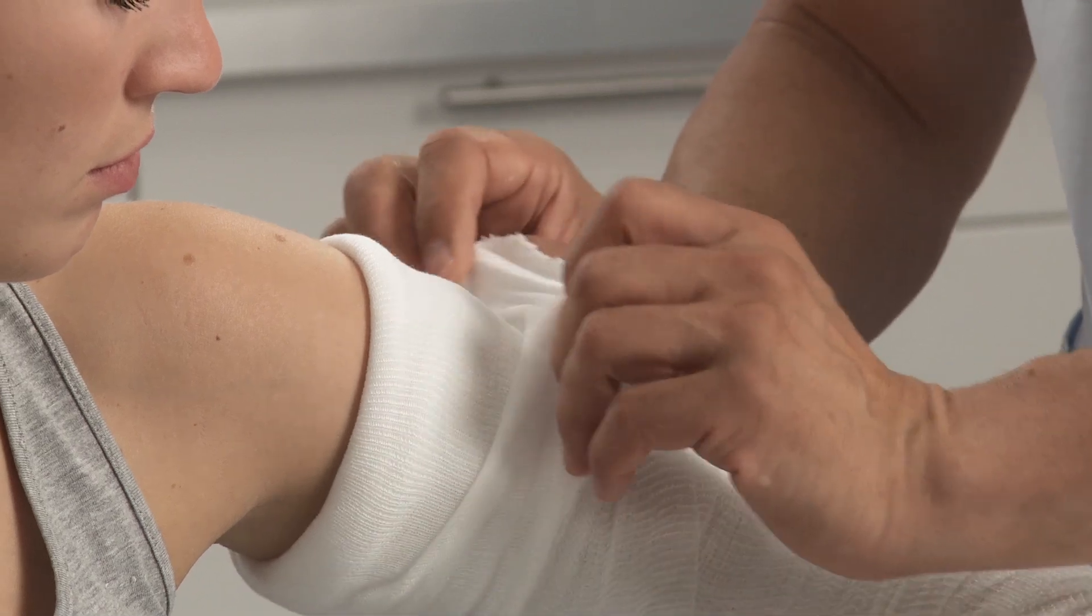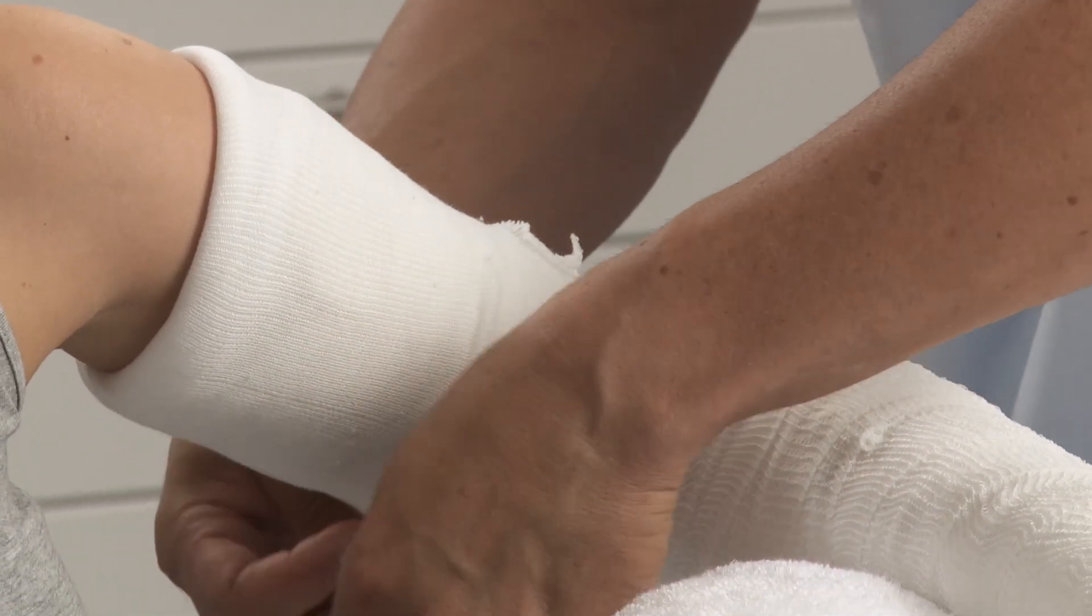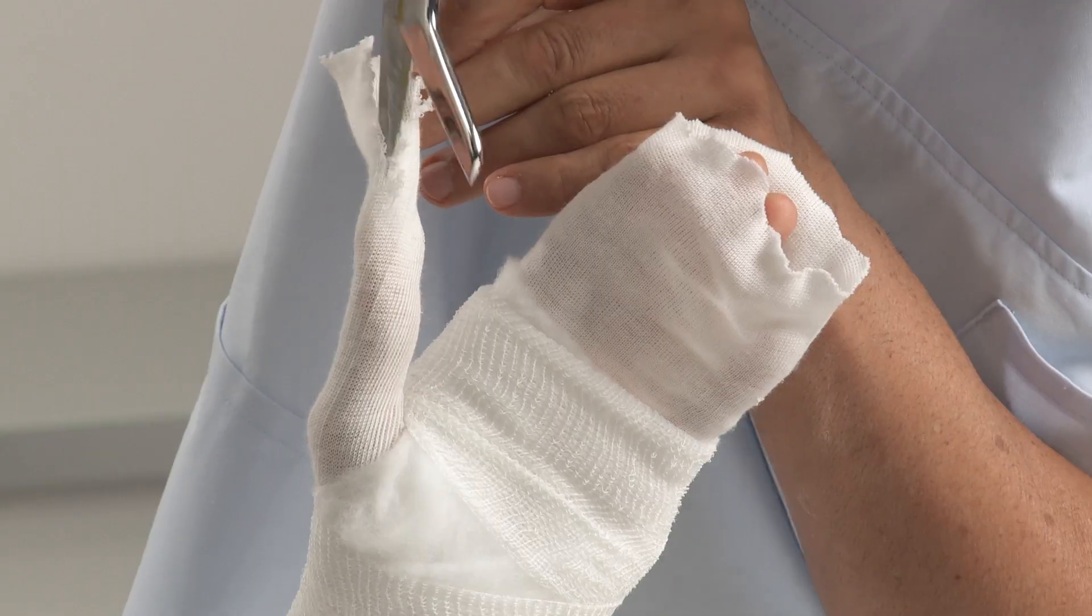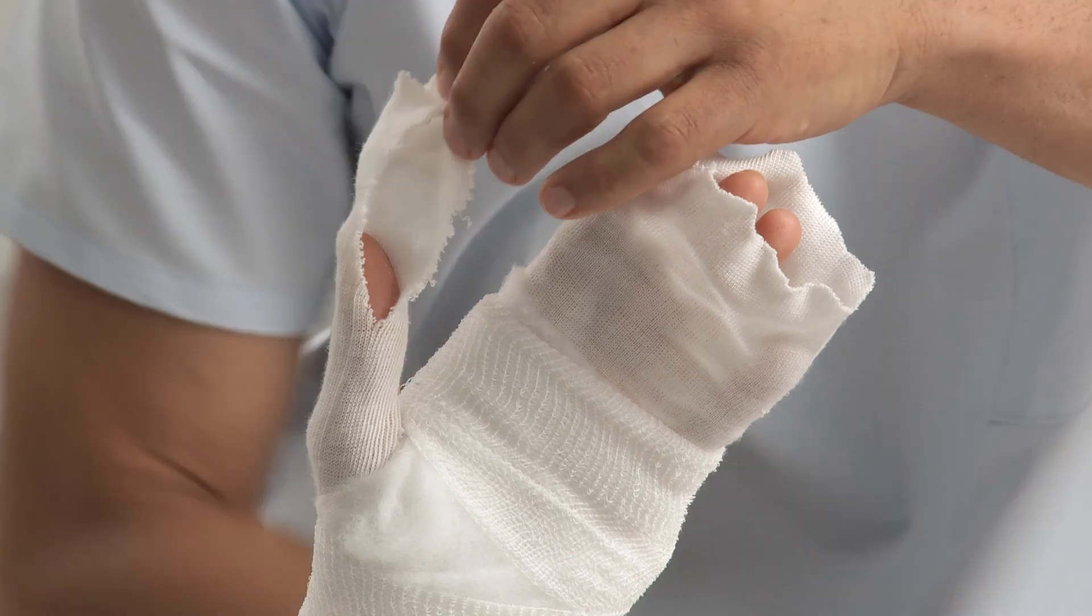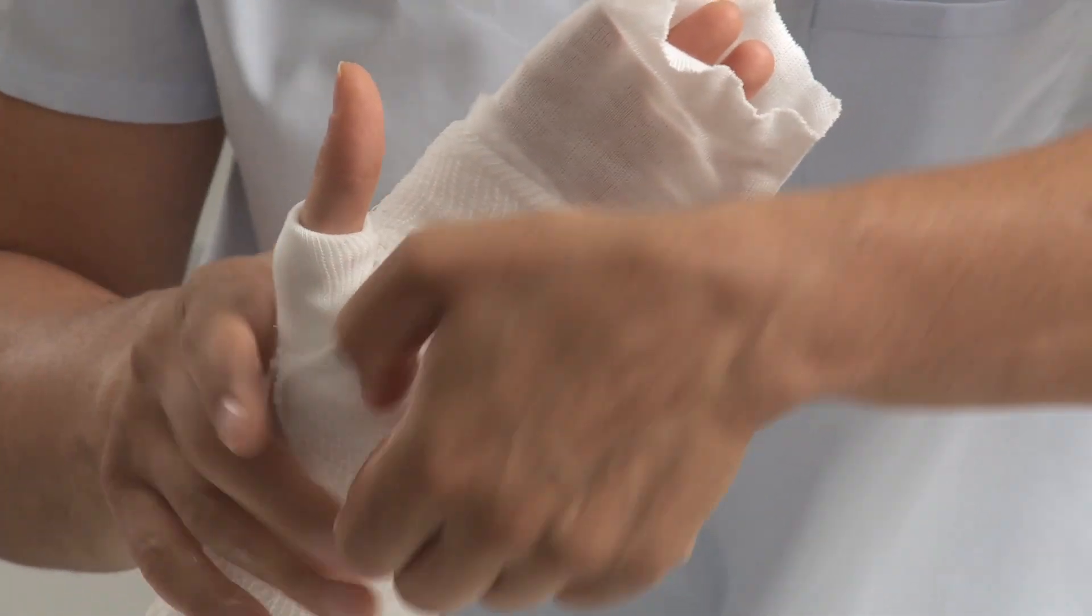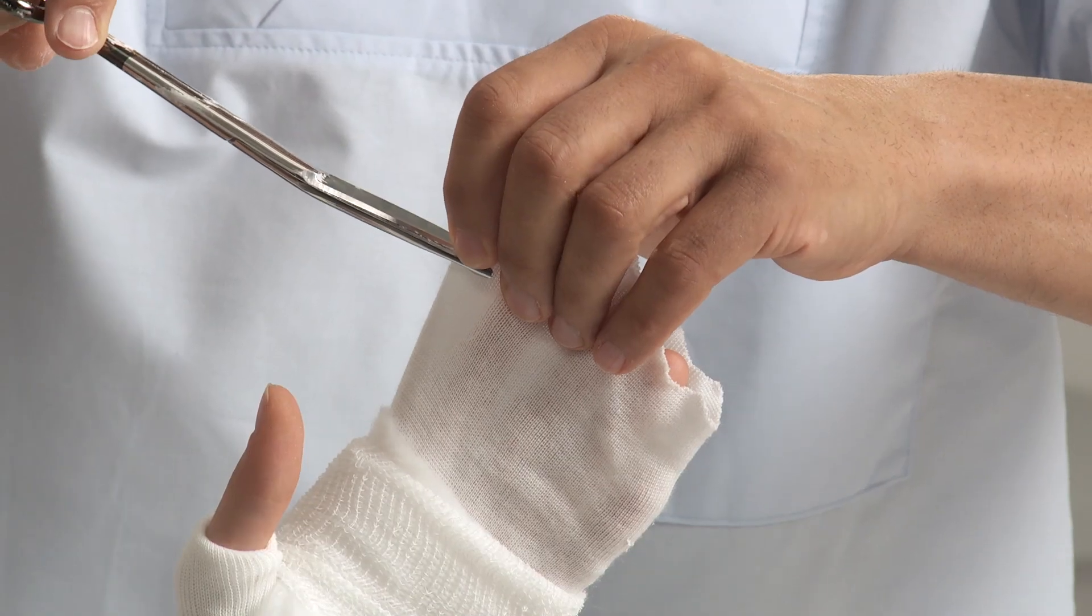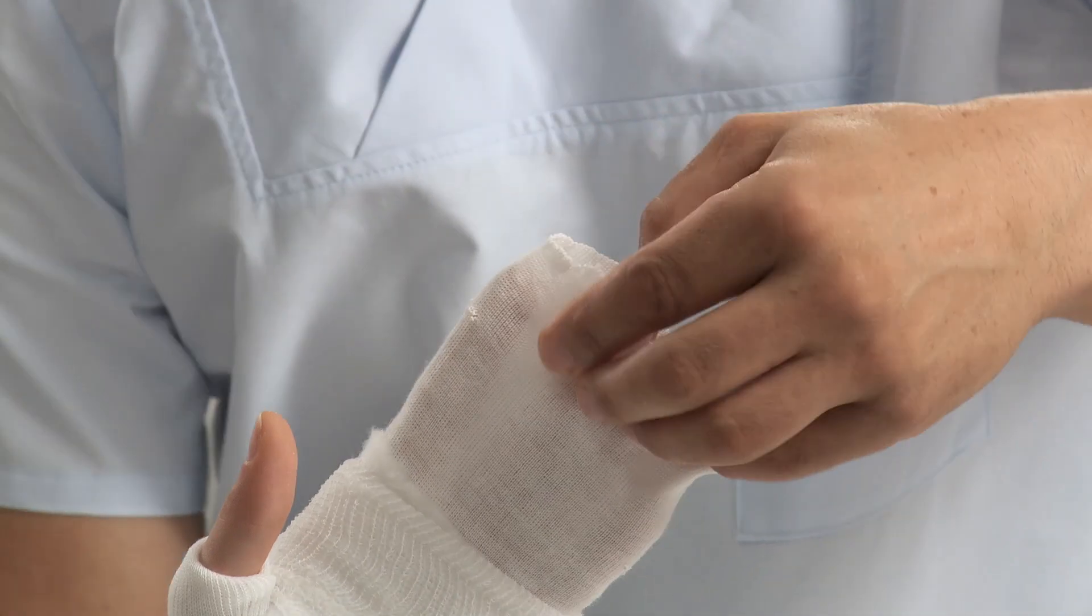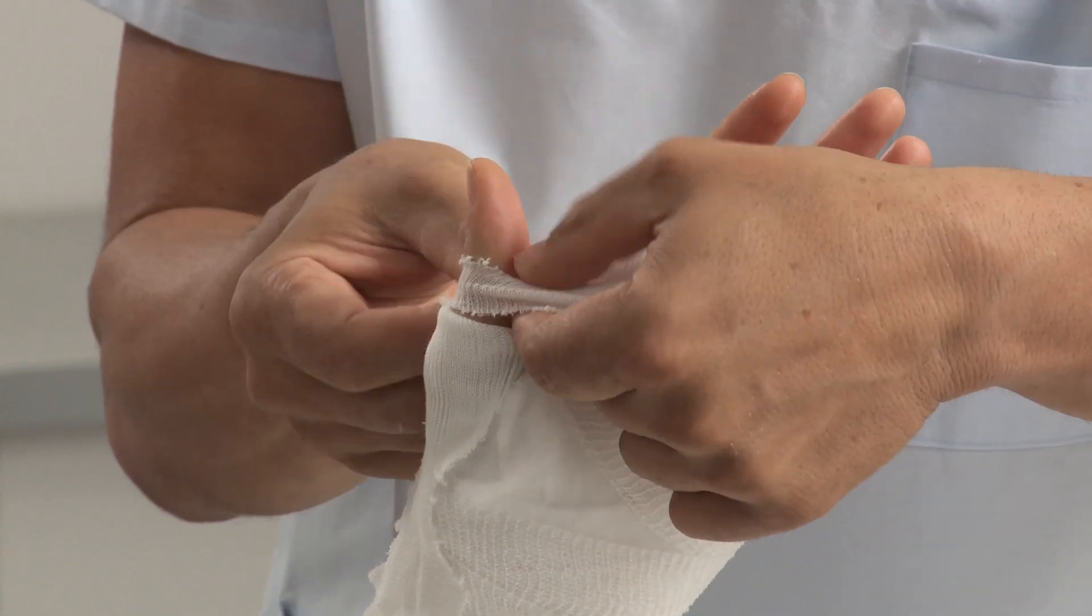Fold down the arm stockinette at the proximal end. Cut into the thumb stockinette and fold down. Make a small cut at the distal end of the arm stockinette. Fold it down and pass the thumb through the cut.